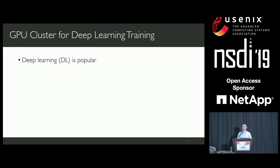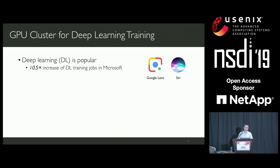Deep learning-based technology has been widely applied in many domains, such as object detection and speech recognition. With the increase of those applications, more and more deep learning models need to be trained. In Microsoft, the number of their deep learning models has increased by more than 10 times during the past year. Training jobs are compute-intensive and require special hardware—GPUs—to execute.